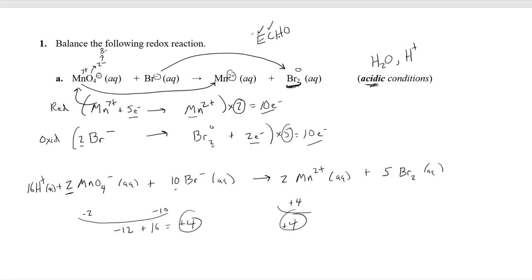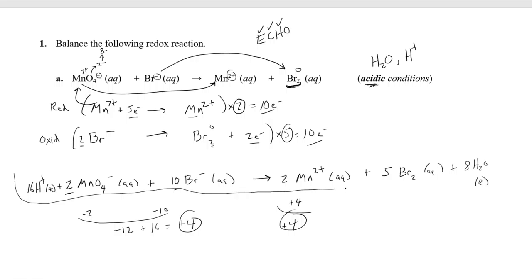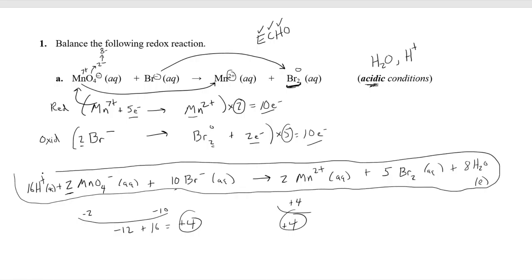We've balanced the electrons and the charge. H in ECHO stands for Hydrogen. We've added 16 H⁺ on the reactant side, but there are no hydrogens on the product side — that breaks conservation of mass. Since water is available, we add 8 H₂O (l) to the product side. That gives 8 times 2 equals 16 hydrogens, balancing out. Finally, use oxygen as a check: two MnO₄⁻ gives 8 oxygens, and 8 H₂O gives 8 oxygens — they balance. This is our final balanced equation under acidic conditions.